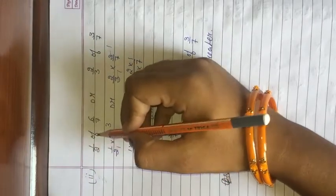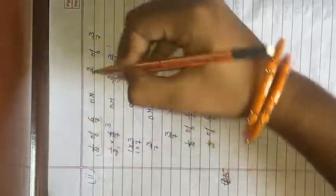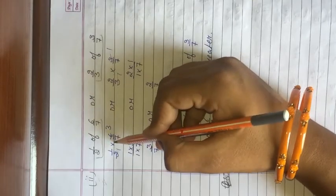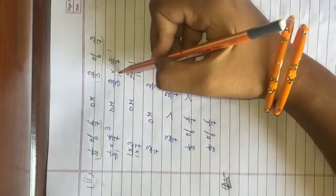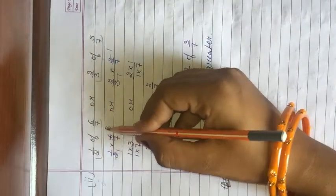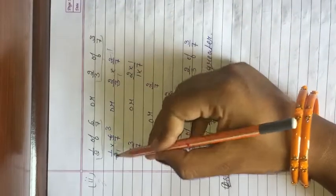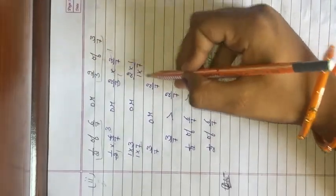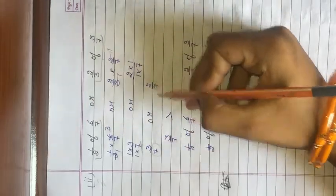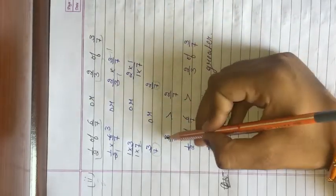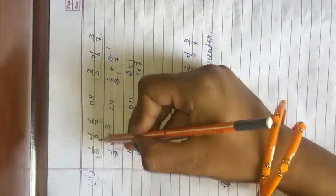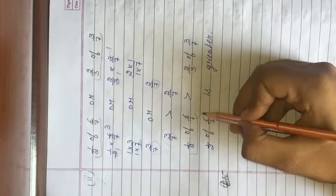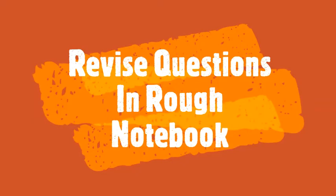Next part: 1/2 of 6/7, or 2/3 of 3/7? Two values are given; find out which is greater. 1/2 of 6/7: cancel 2 and 6, giving 3/7. For 2/3 of 3/7: cancel 3 and 3, giving 2/7. Denominators are already the same. Check numerators: 3 is greater than 2. So 3/7 > 2/7, meaning 1/2 of 6/7 is greater than 2/3 of 3/7.